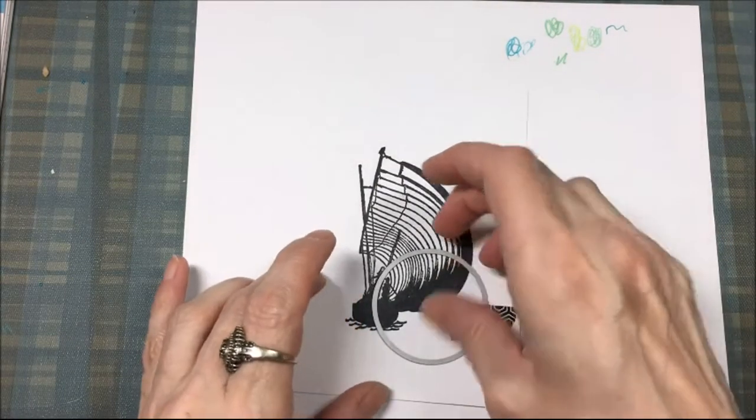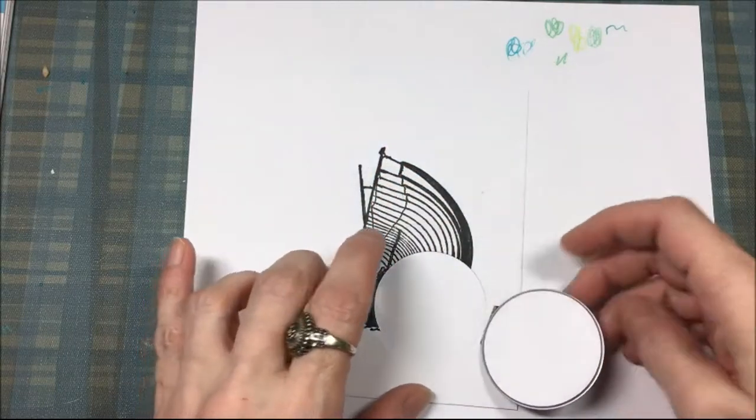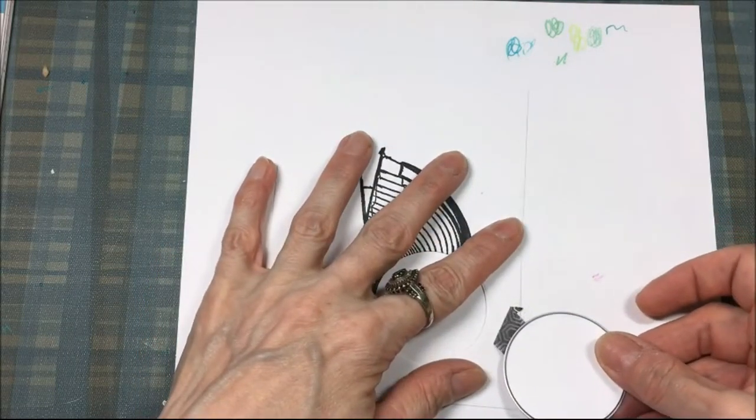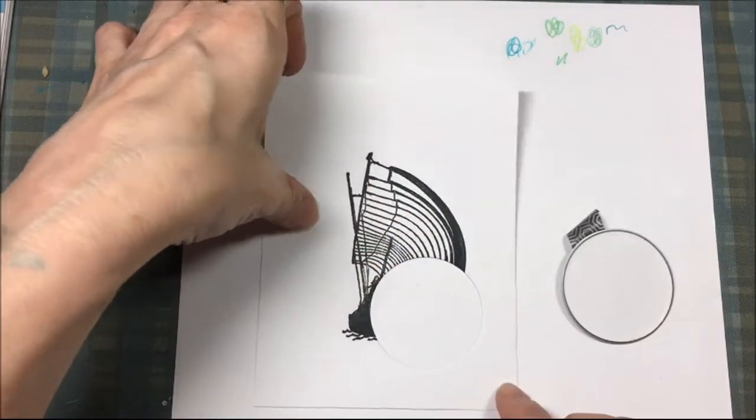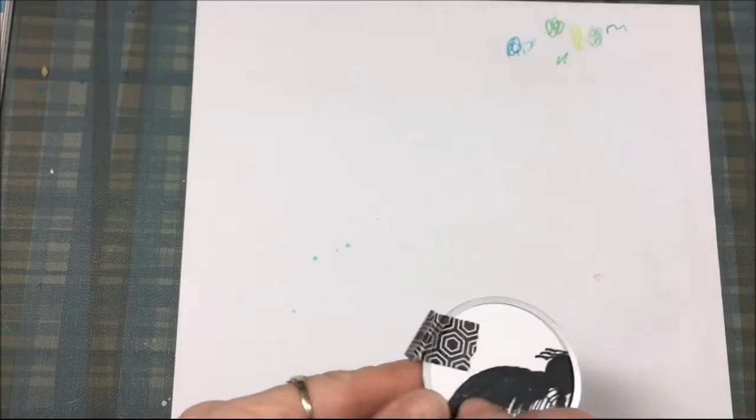And I'll carefully peel that die off of my card front and I'll carefully pop out the circle because I'm going to set that aside because I am going to use that circle.